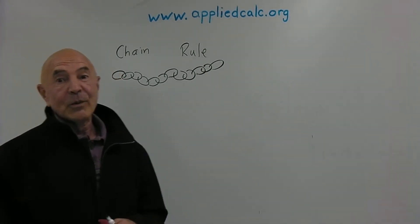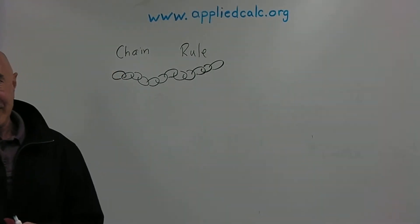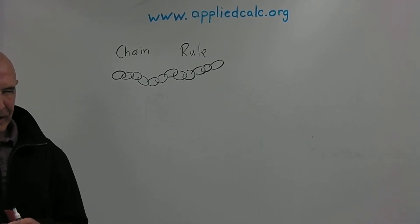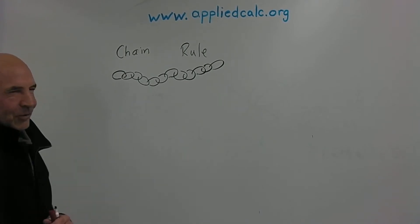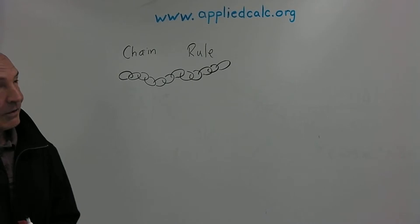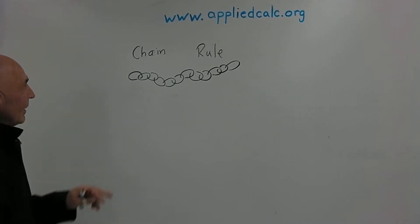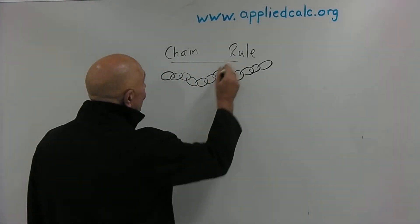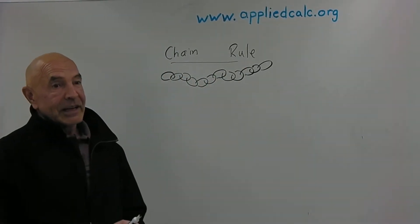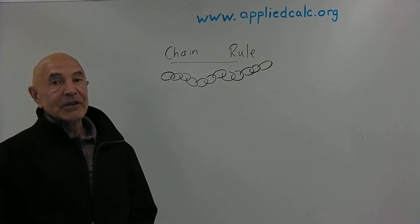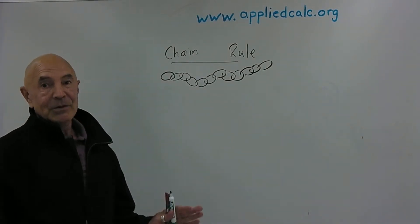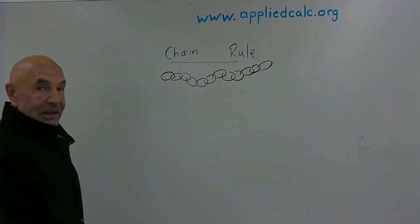Alright, we need to talk about another rule. Remember we talked about the product rule a little while ago? Now we're going to talk about the chain rule, which is a way that will enable you to differentiate anything under the sun — absolutely anything.